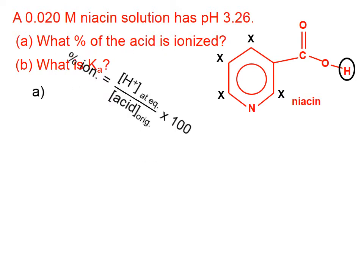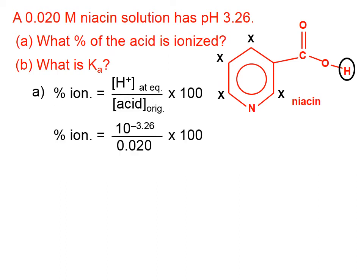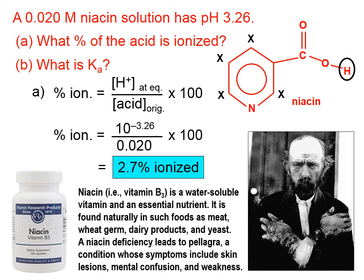Let's start with the definition for percent ionization. We can calculate the numerator of that expression because the hydrogen ion concentration at equilibrium can be found by taking 10 to the negative pH. The denominator is simply the original acid concentration, which is 0.02. Putting that in percentage form gives 2.7% ionized. You can see that this weak acid is not even close to being 100% ionized.